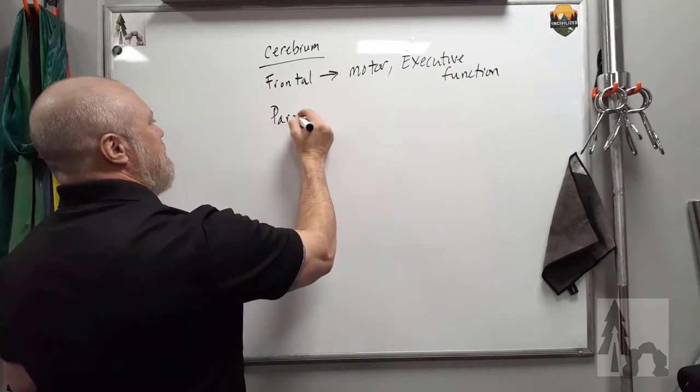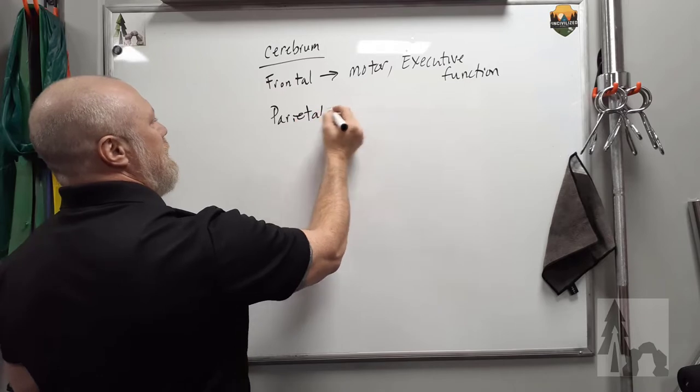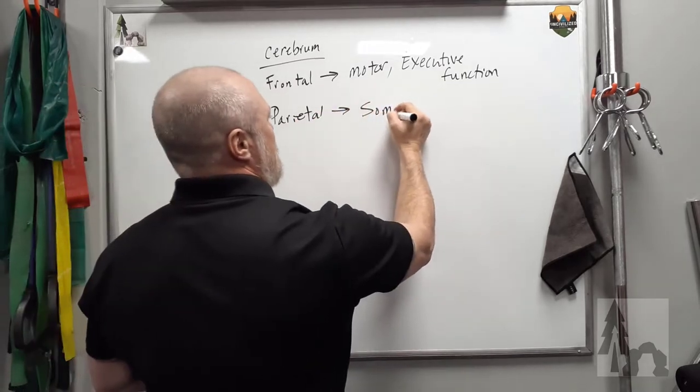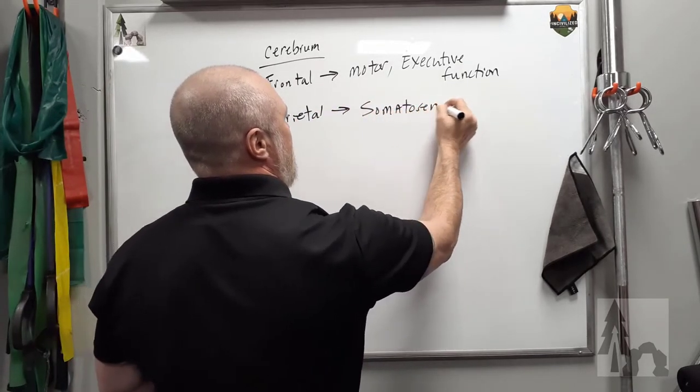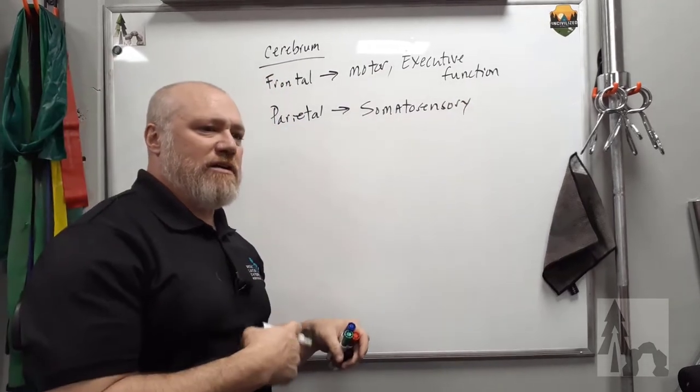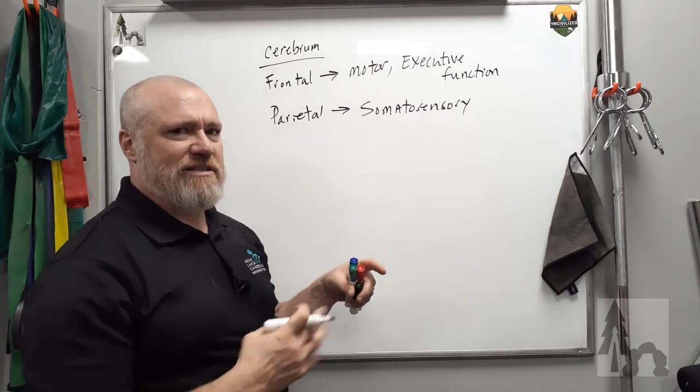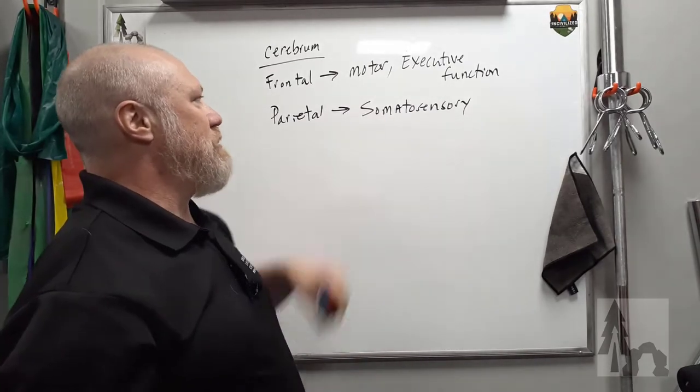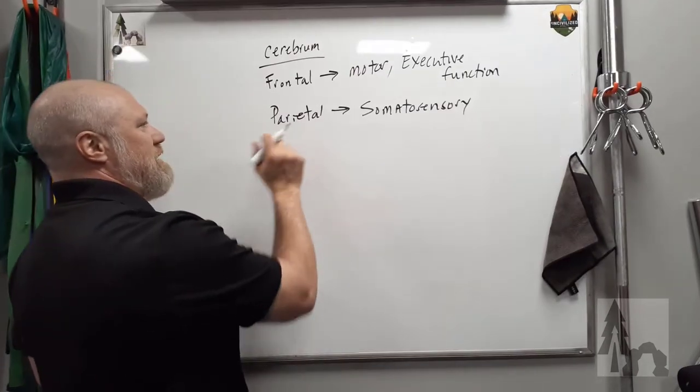Your parietal lobe, keep track of that as your somatosensory area. Every time you feel something from your body, viscerosensory, your guts and innards and different glands, that's a different area of the brain. But somatosensory happens in the parietal lobe.